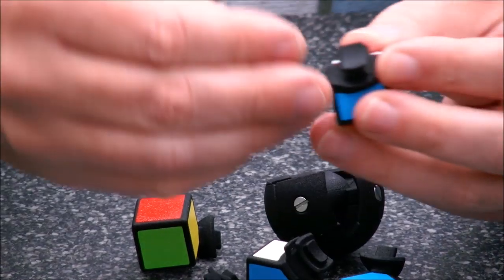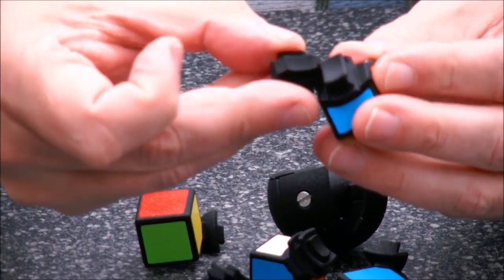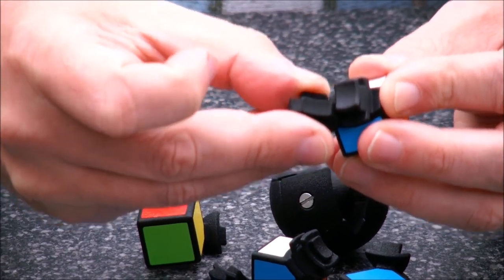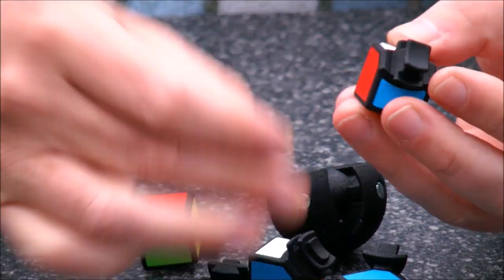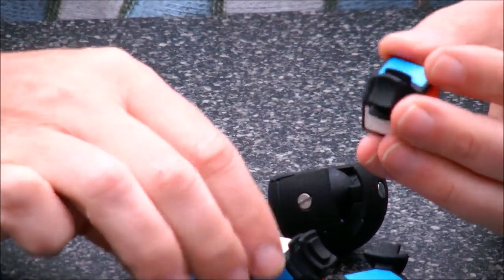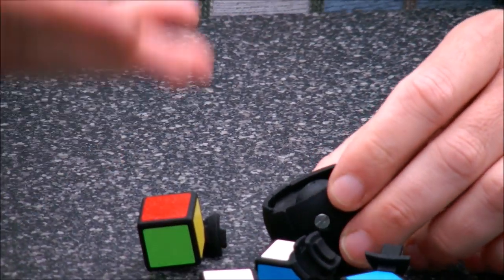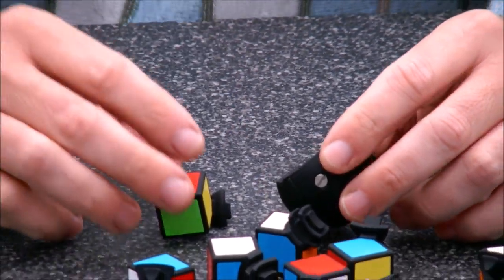However, if we have an edge of this type, it cannot pass. It blocks. So, this way the mechanism was implemented. And at the outside, you don't see anything because the mechanism is completely internal.